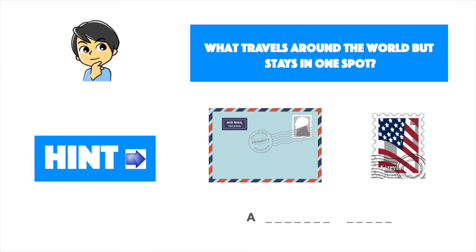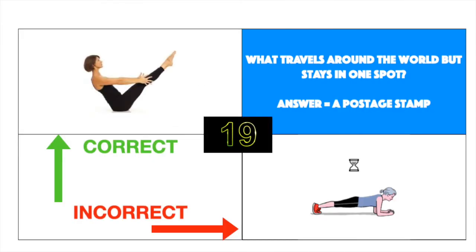What travels around the world, but stays in one spot? Answer, a postage stamp. Correct, do the boat pose. Incorrect, hold the plank.